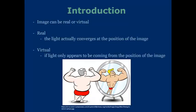In mirrors, the images can be either real or virtual. An image is real when the light actually converges at the position of the image. A virtual image, on the other hand, is if the light only appears to be coming from the image. When most people think about mirrors, what they're thinking about are plain mirrors, or flat mirrors. In this case, the image will always be virtual.